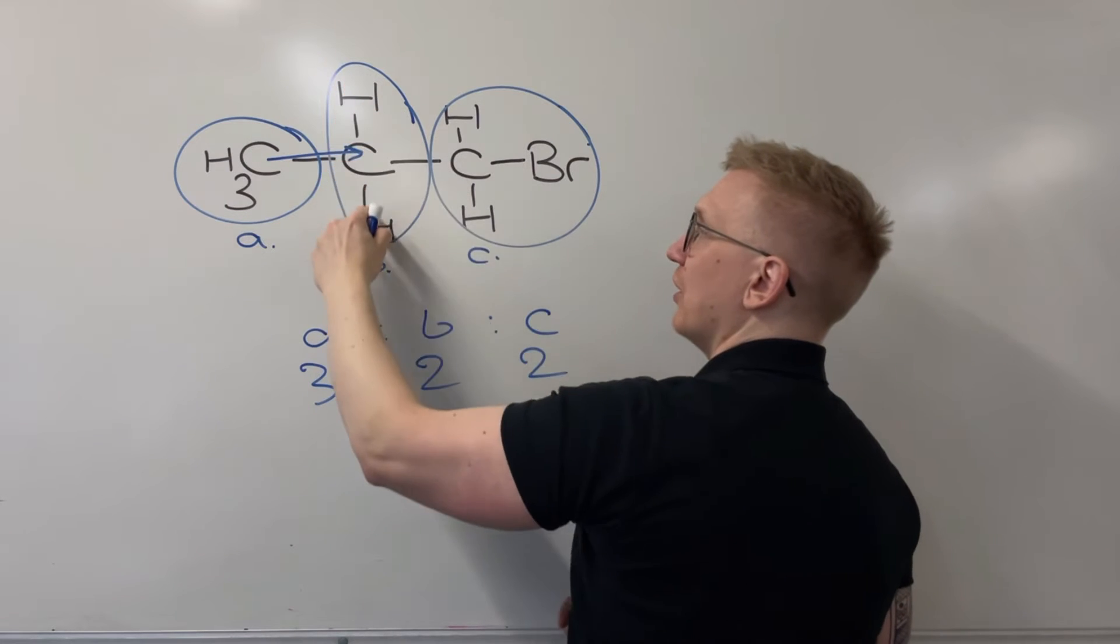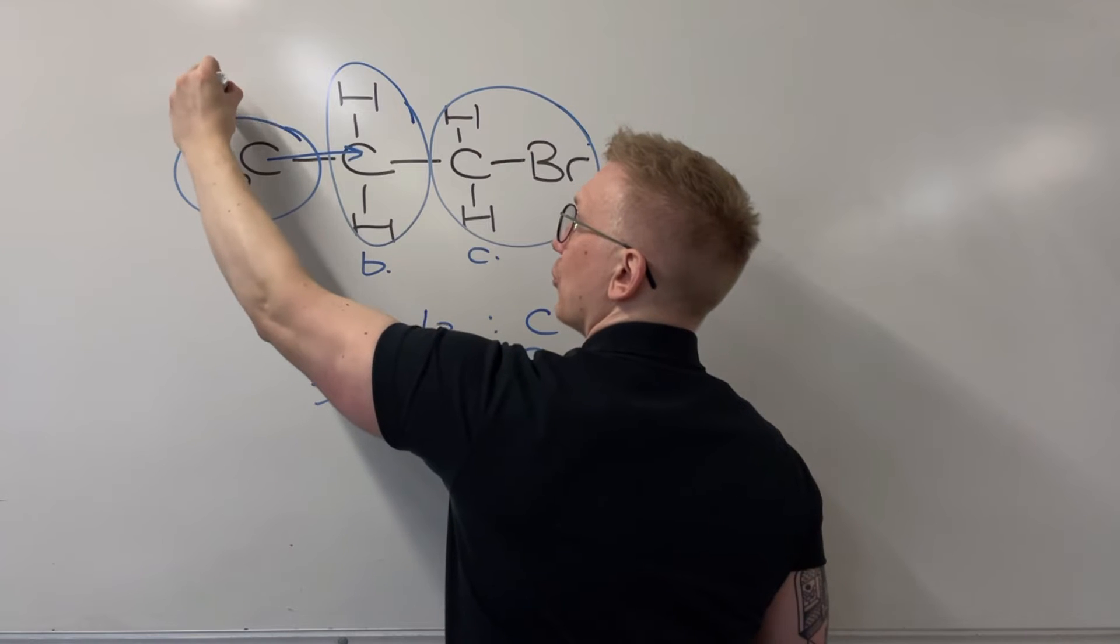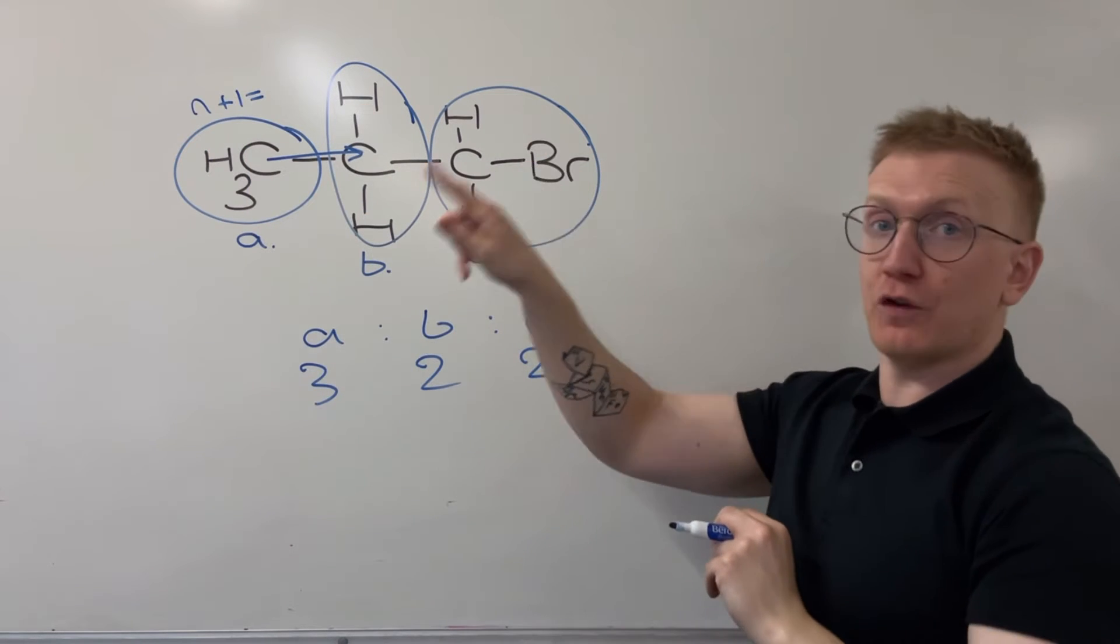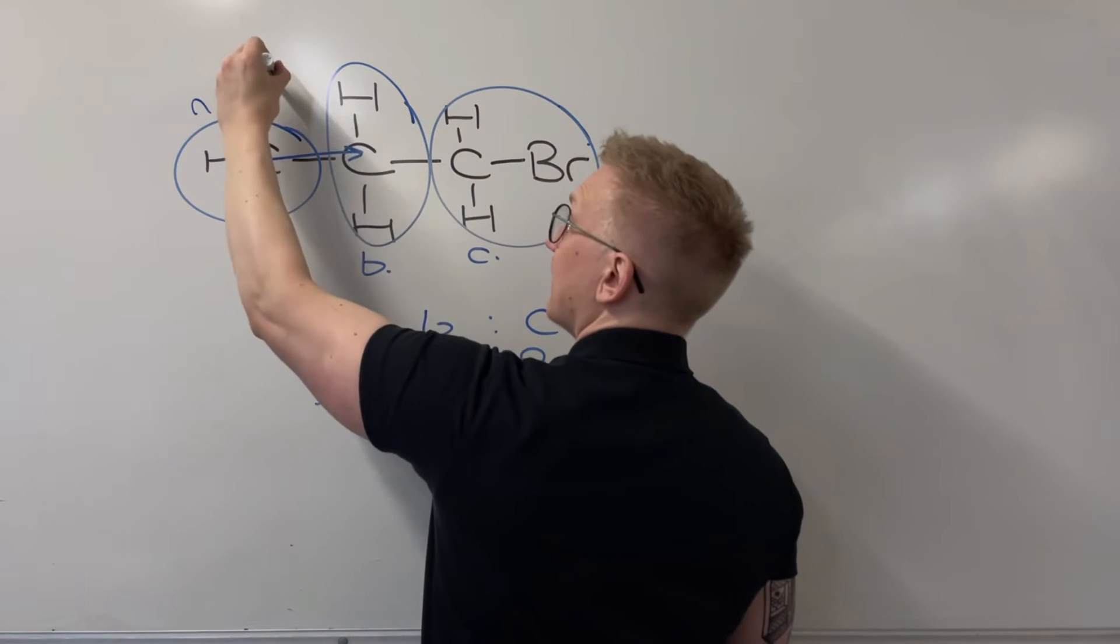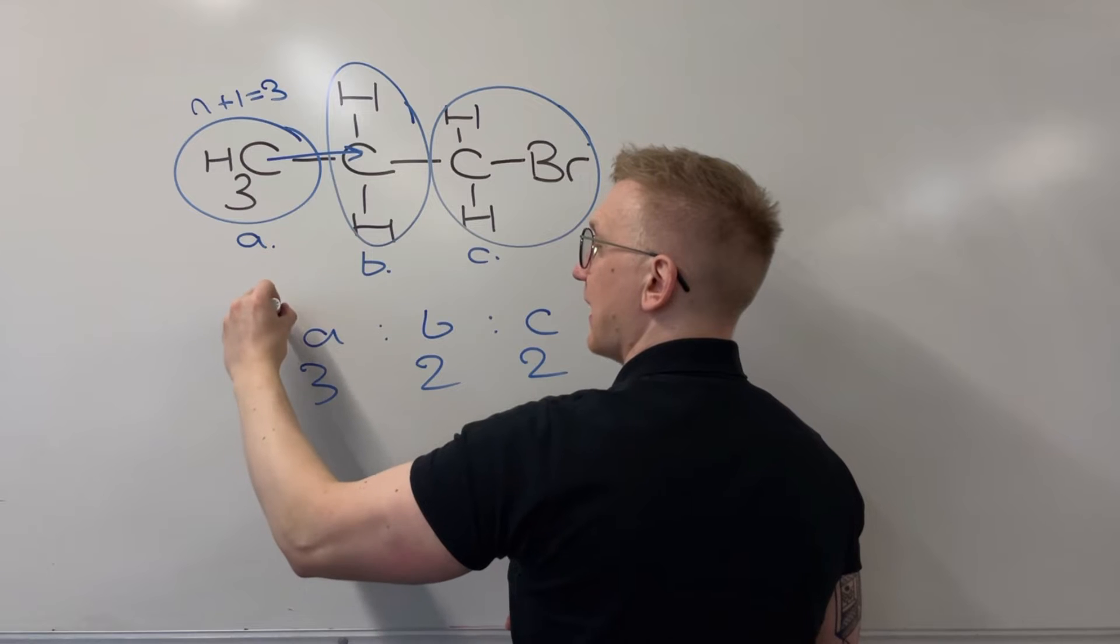And so here I've got 1, 2 just here and so that means my N plus 1 rule, which is how we decide the splitting pattern, is going to be 2 plus 1. And so that means it's going to be 3. So that means environment A is going to be a triplet.